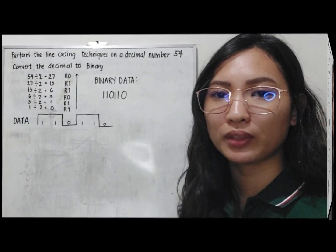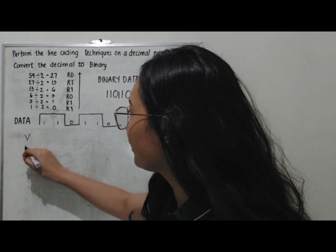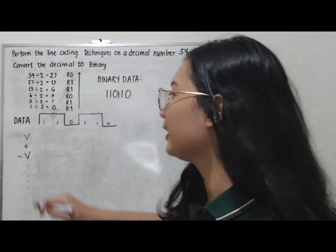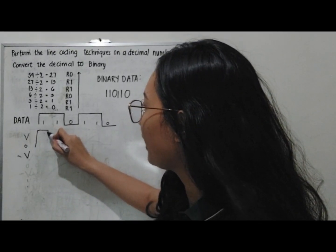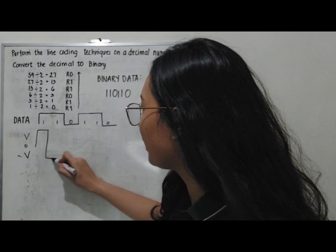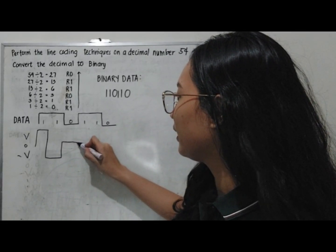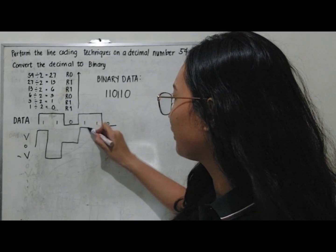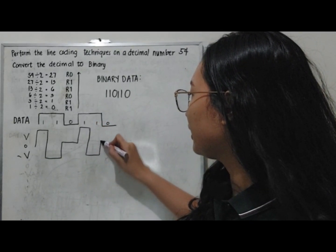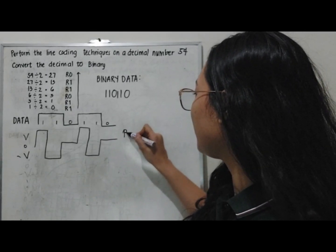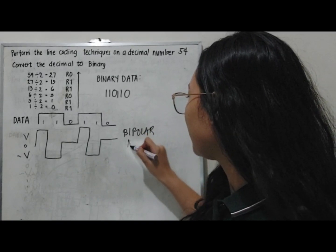For the bipolar NRZ of decimal 54: positive one, then negative for the next one, then zero, positive again, then negative, then zero. This is the bipolar NRZ waveform.